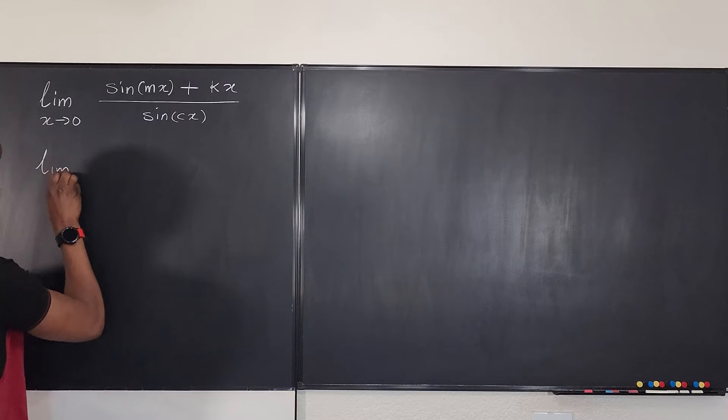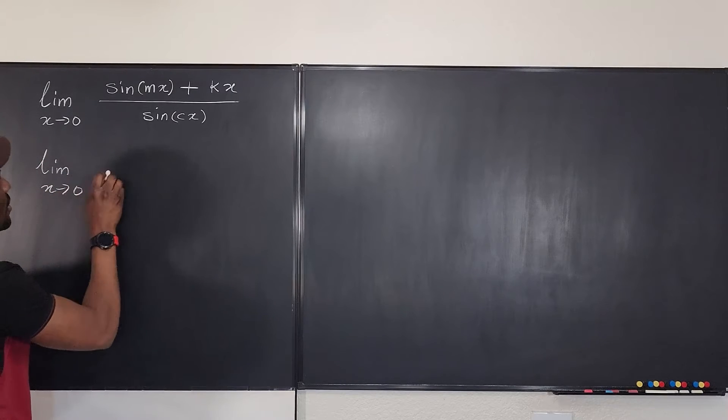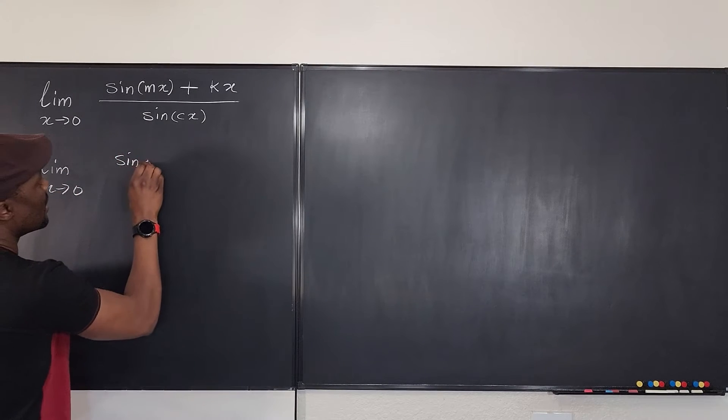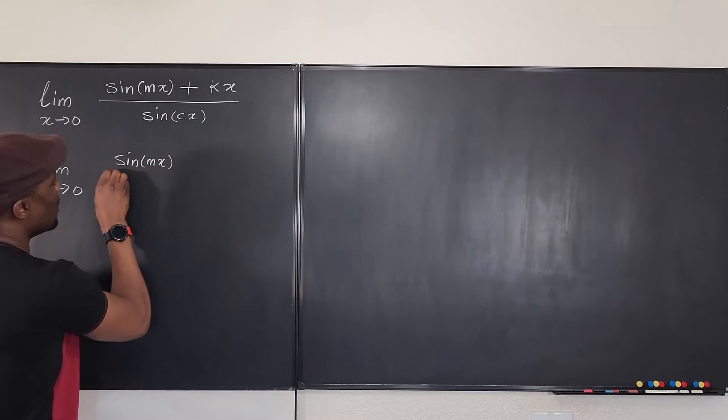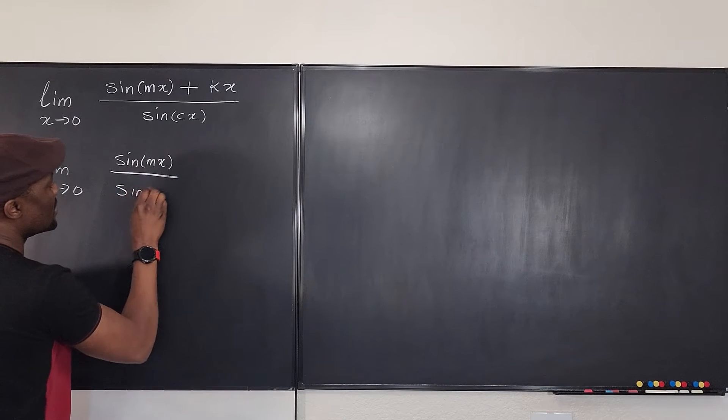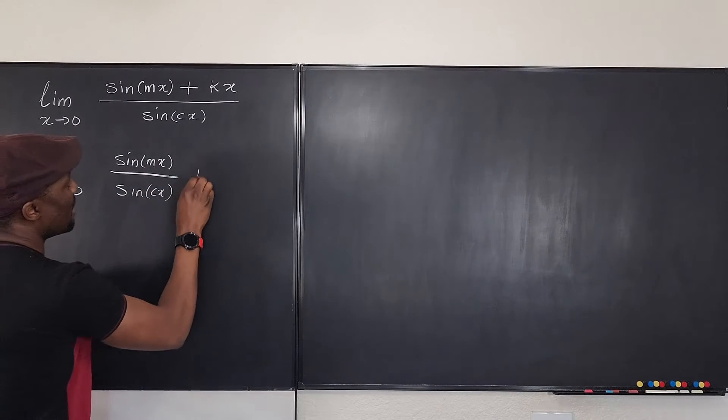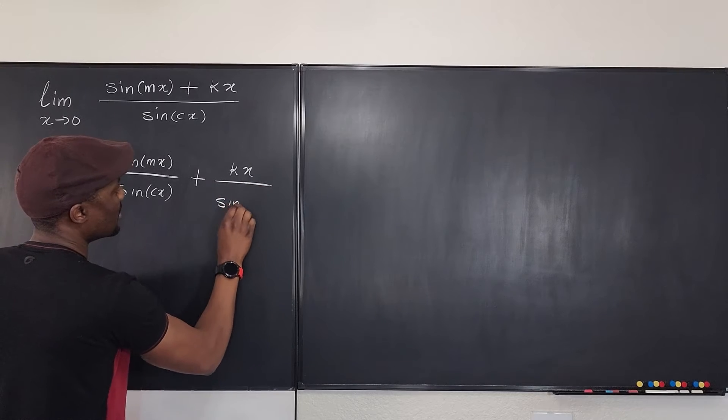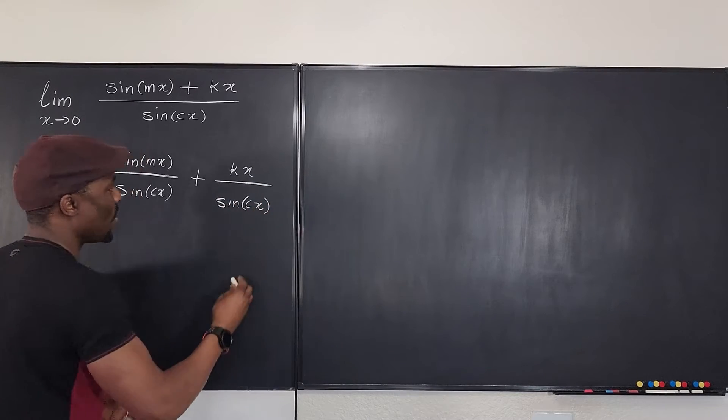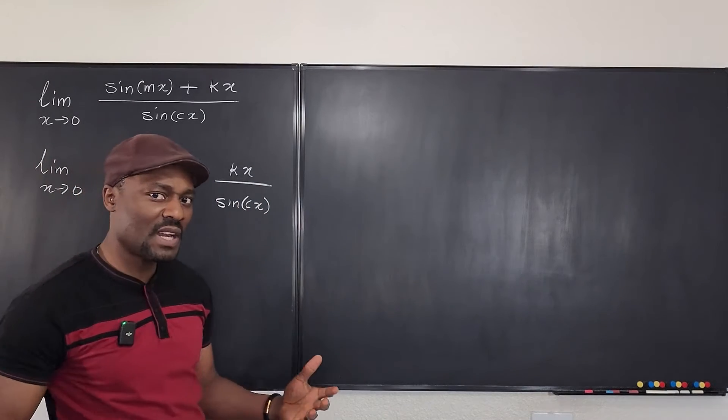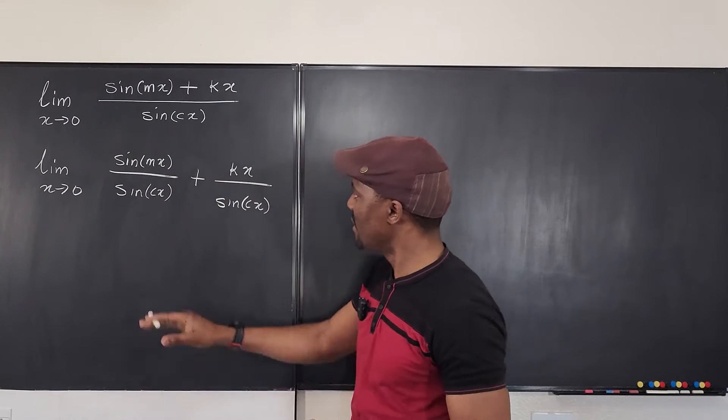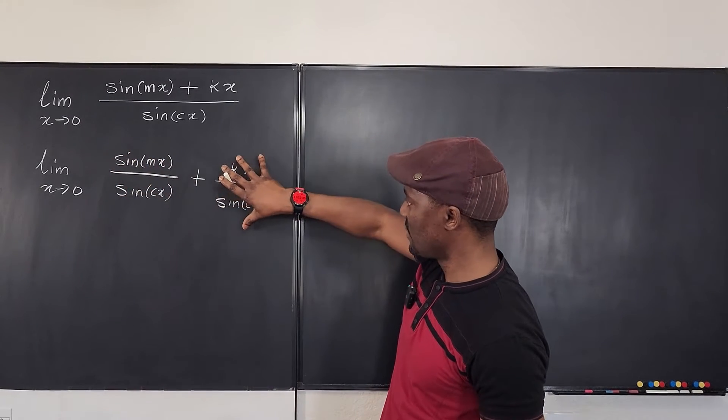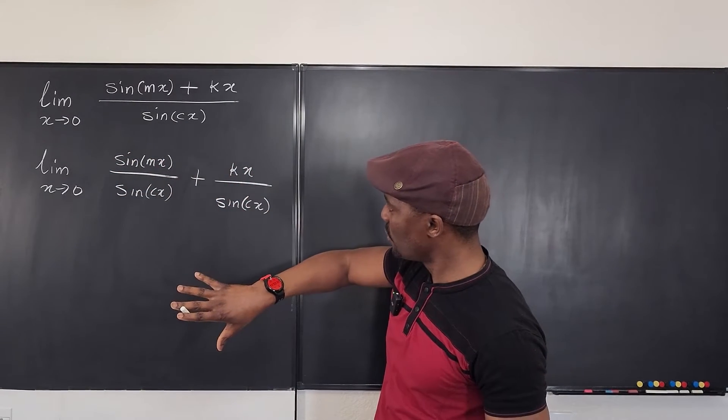So this is the limit as x goes to zero of sine mx over sine cx. Then I'm going to add this kx over sine cx. So even if you were presented with something like this, you should be able to take this limit. So what would you do?